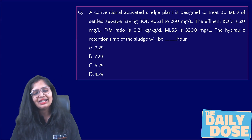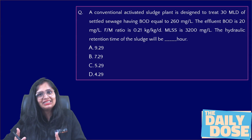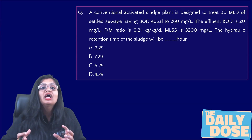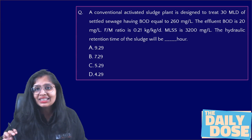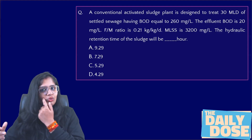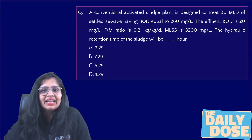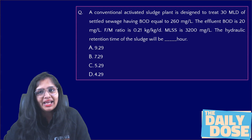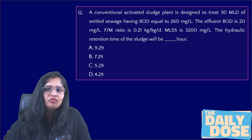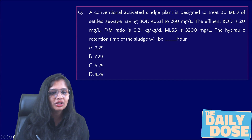I took this question from the activated sludge process because every year questions are asked in the GATE examination. Moreover, the formulas that are necessary here — you will use one formula and then you will have to use two formulas. So this is why I have taken this question. Let's start.